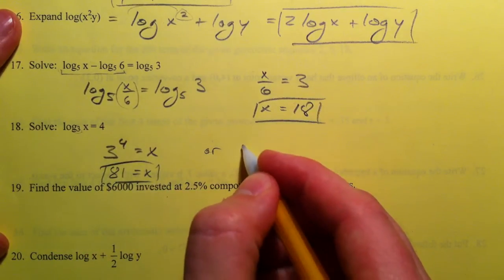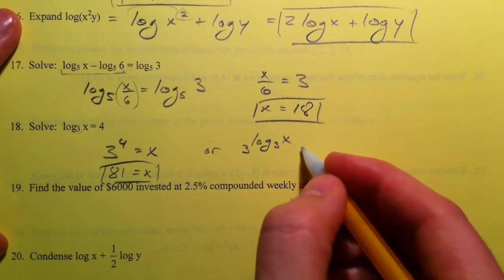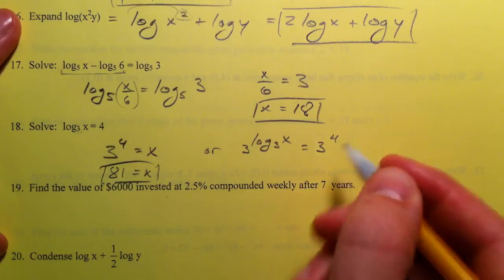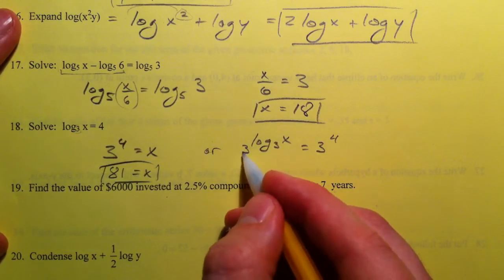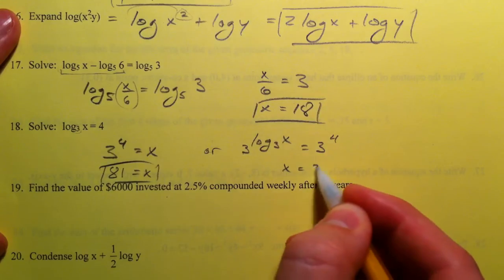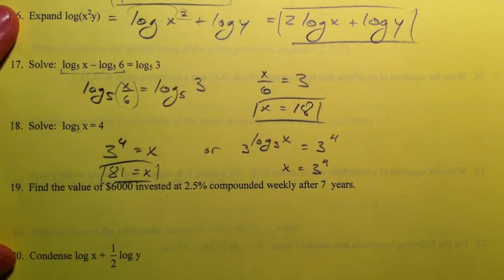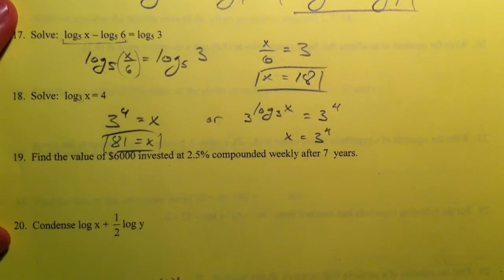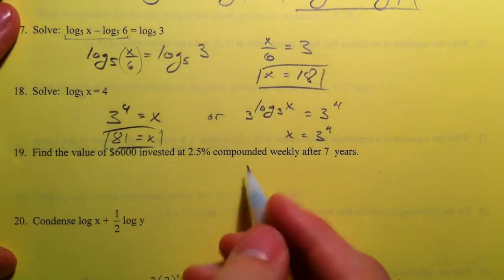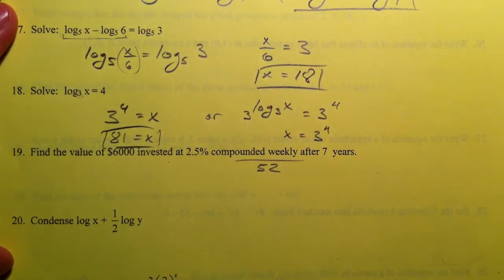Or you could say, well, let's exponentiate both sides. So 3^(log base 3 of x) equals 3^4. 3 to the log base 3 power cancels out. You're left with just x equals 3^4. And that's the same deal.